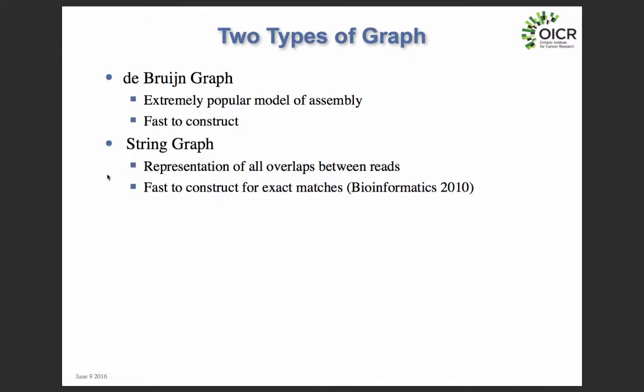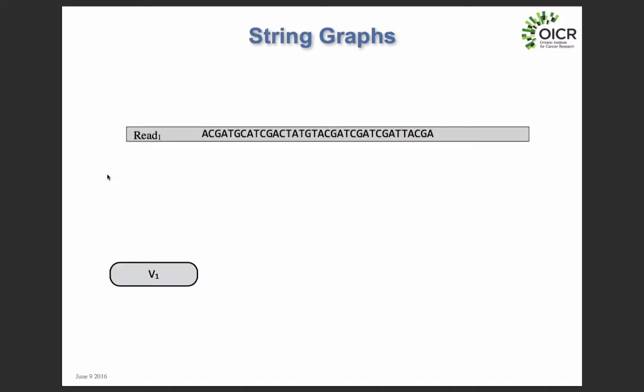There are two types of graph used by genome assembly software. There's the de Bruijn graph, which breaks all the reads into short fragments called K-mers. If you sequence a 100 base pair read, the assembler might break that read up into 61 base pair substrings and construct a graph of those substrings. When building assemblies of Illumina data, most algorithms are based on this de Bruijn graph model — it's extremely fast and efficient to work with these short fixed-length substrings. The other type is called a string graph, where we keep reads intact and connect overlapping reads with edges.